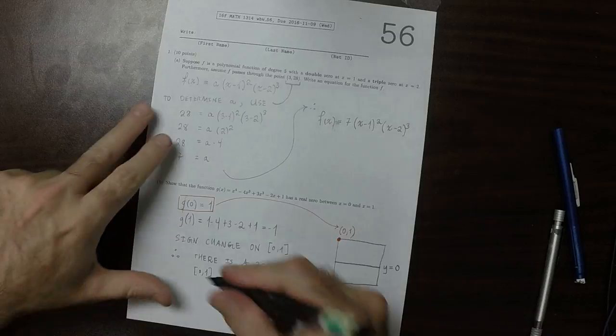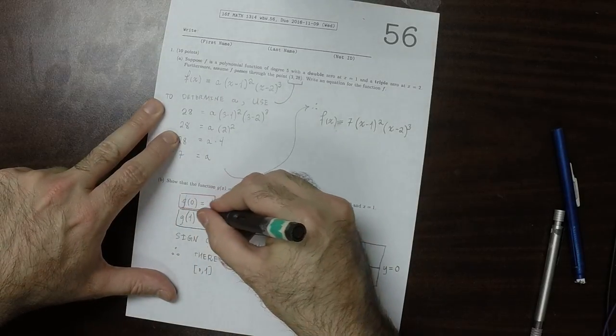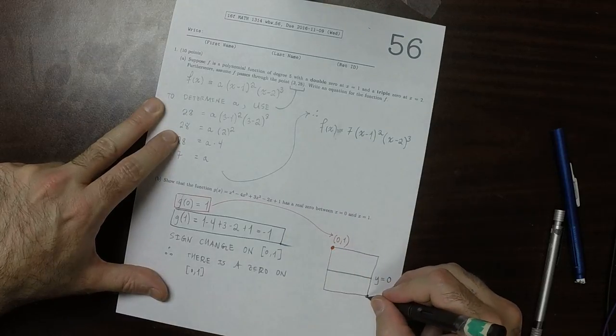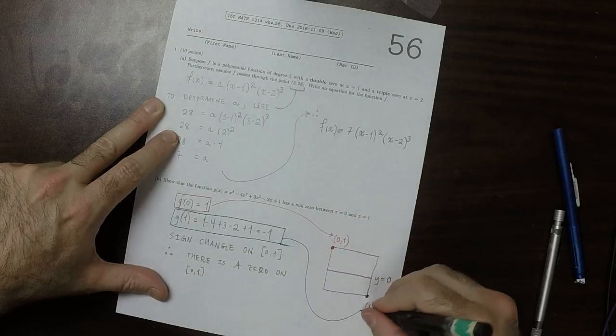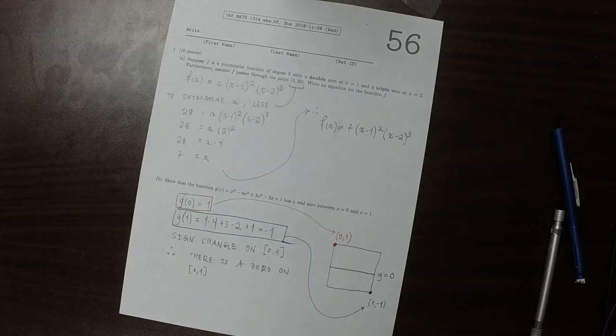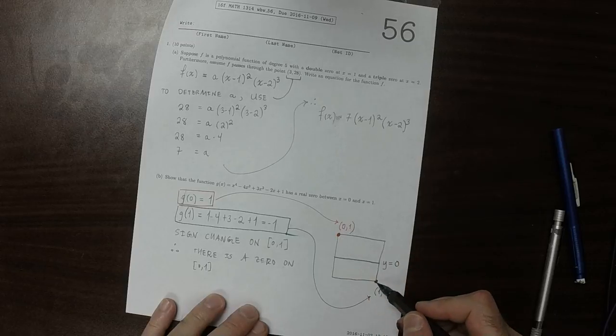And this point is giving you this other point here. This is the point 1, negative 1. And so now, what you have to do, the challenge is you have to start at the red point and end at the green point.